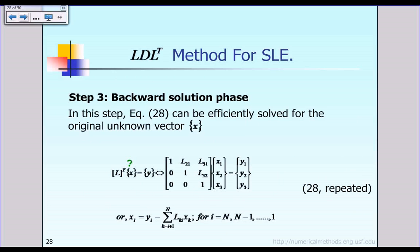We can solve for X because the matrix L transpose is already known at the end of step one, and the intermediate vector Y is already known after the diagonal scaling phase. So finally we can solve for the unknown vector X.